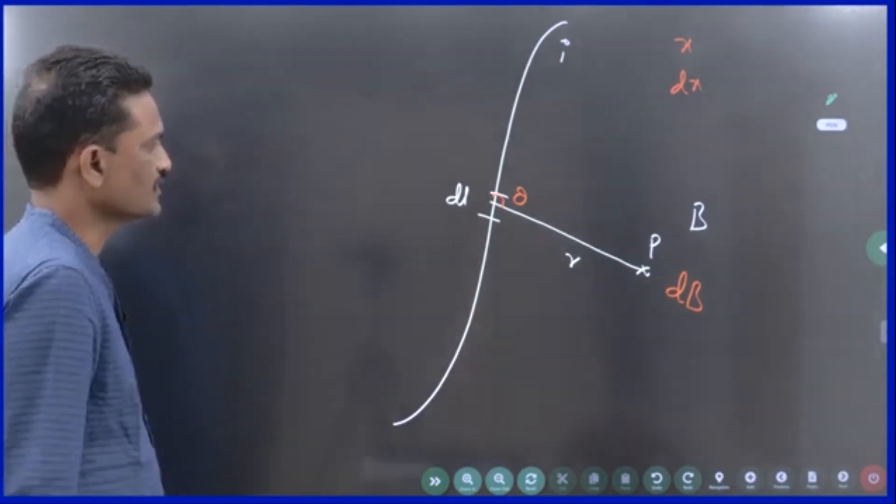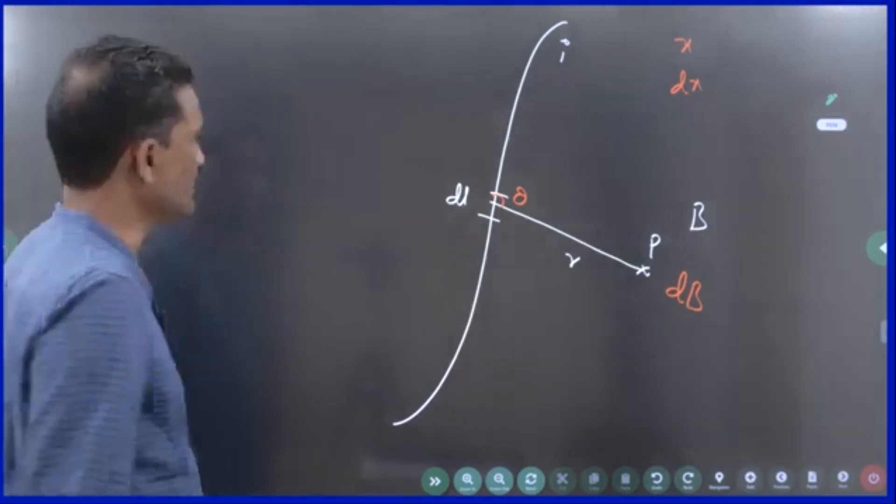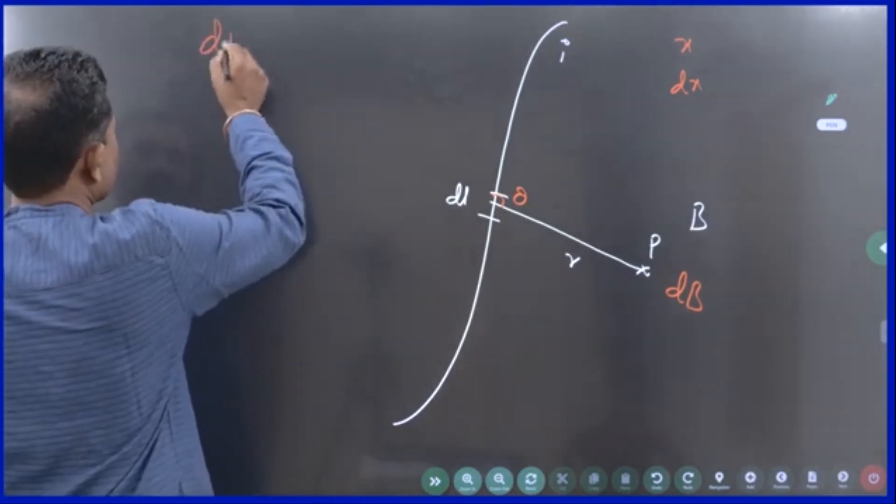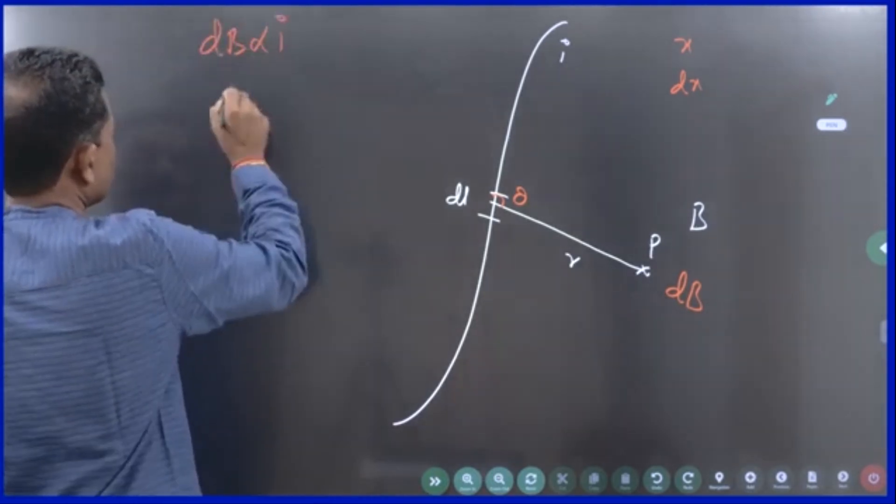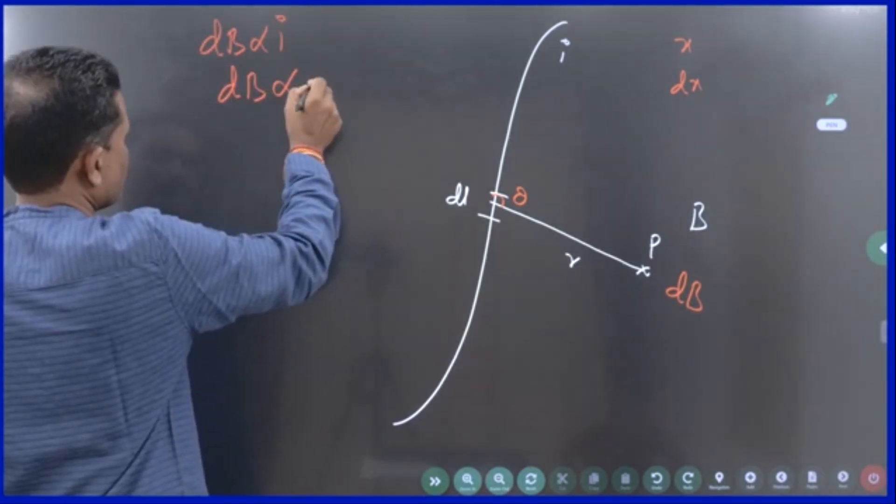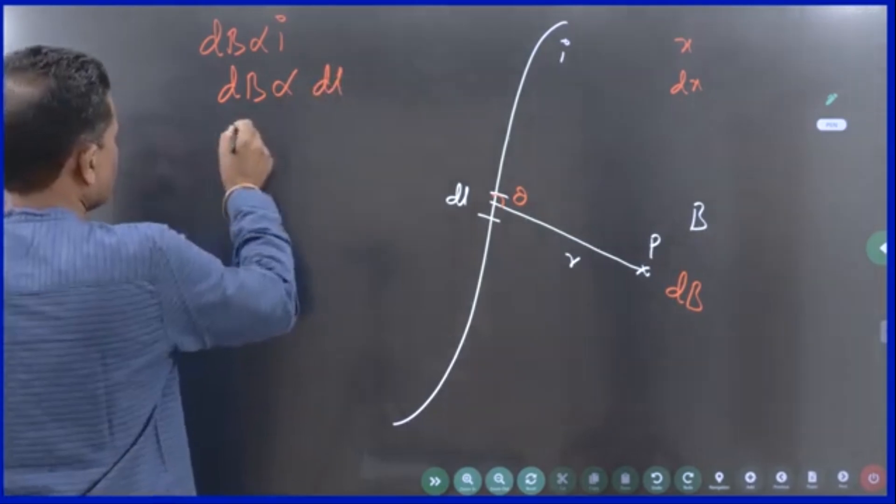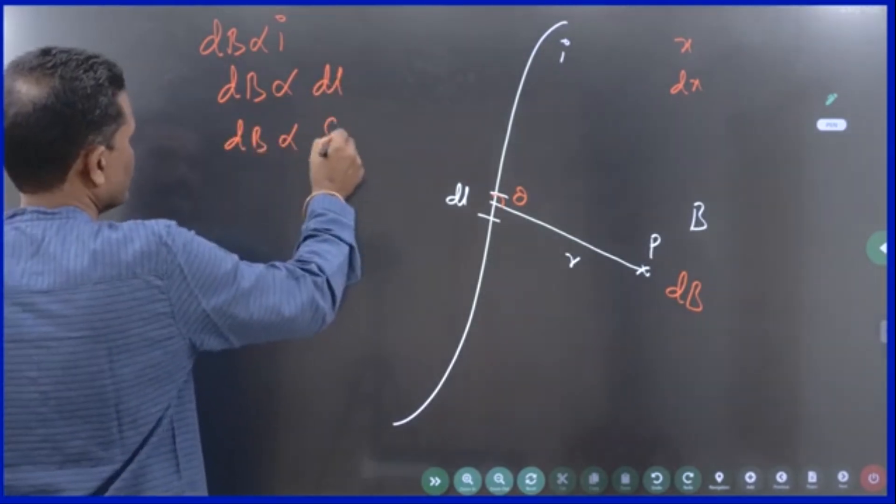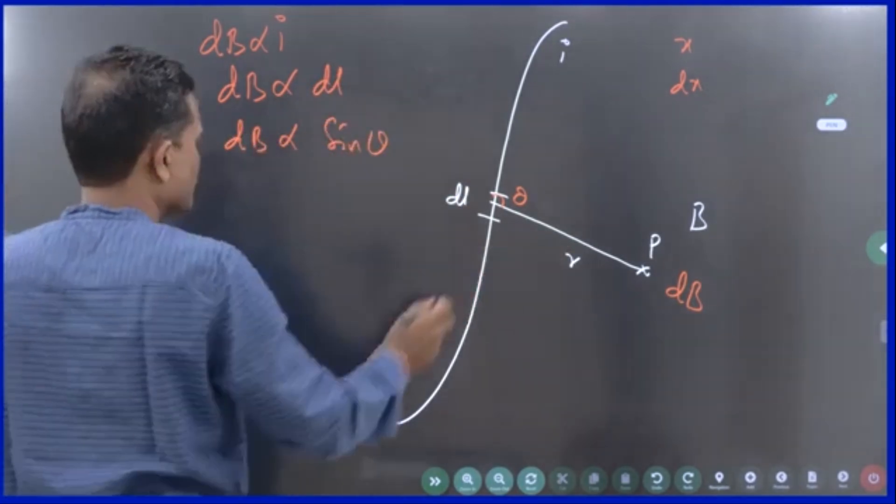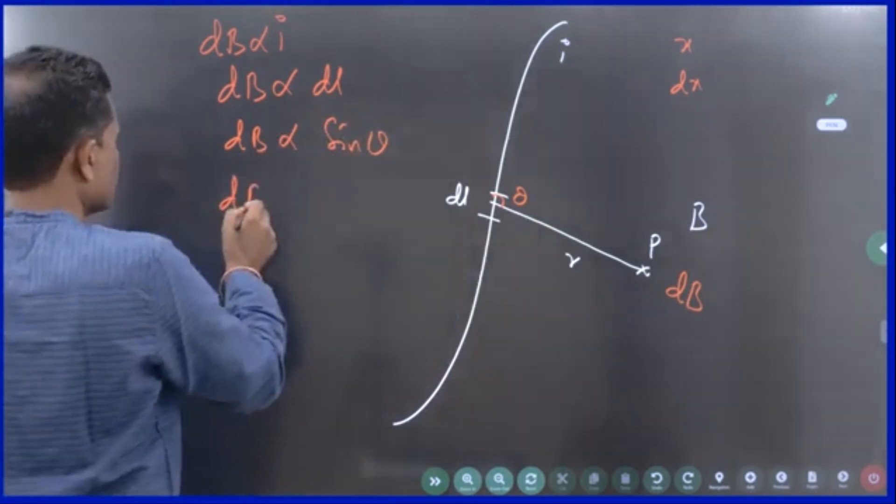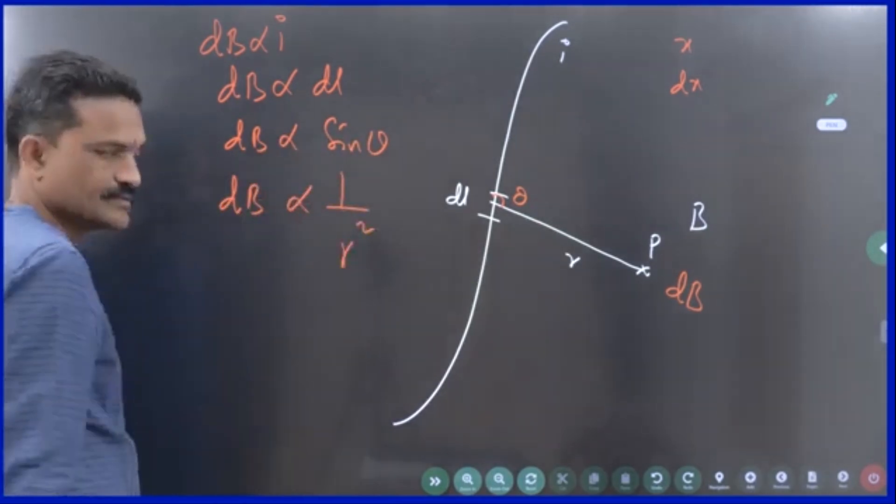So, according to Biot-Savart law, this dB is directly proportional to the current, this dB is directly proportional to length of the wire, and it is directly proportional to sin of the angle between this dl and r, inversely proportional to square of the distance of separation.